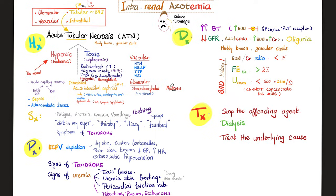GFR is down, azotemia is up — lots of BUN and creatinine in the blood. Urine volume is low. Muddy brown granular casts point to a tubular origin. It's a bad kidney, so the BUN-to-creatinine ratio is low. FENa is high. Urine osmolality is low. How do we manage this? Stop the offending agent — if it's a medication, stop it; if it's a contrast agent, stop it; if it's heavy metal overload, stop the exposure. Then, dialysis.